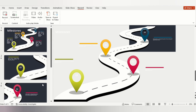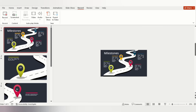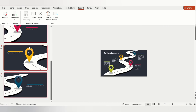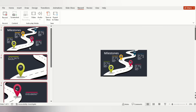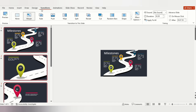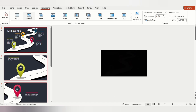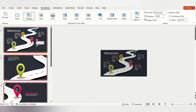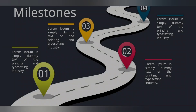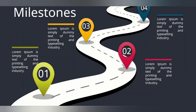Now select one slide and select all slides at once by pressing Ctrl+A. Go to the Transitions tab and apply the Morph transition. Now go to Slideshow to see the beautiful morph transition effect.